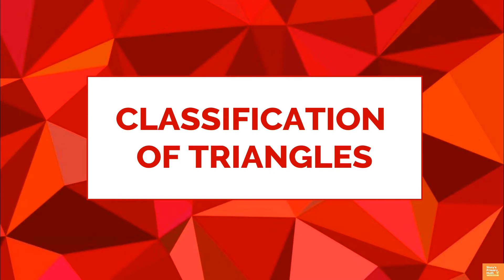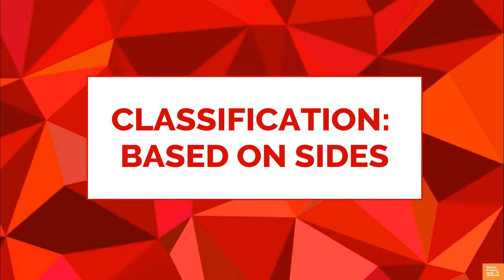Classification of Triangles. The triangles are classified in two ways: based on sides and based on angles. First, based on sides, that is, classification in respect of the relative lengths of sides.